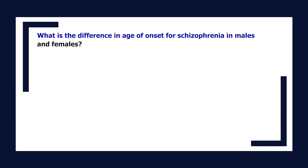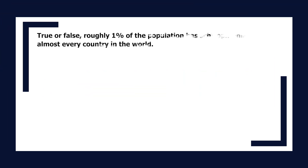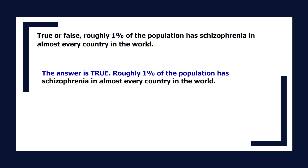What is the difference in age of onset for schizophrenia in males and females? The typical age of onset is 15 to 25 years for males. Roughly 1% of the population has schizophrenia in almost every country in the world — this is true.